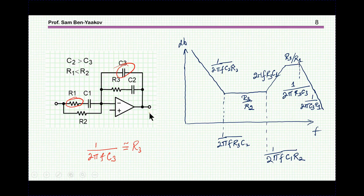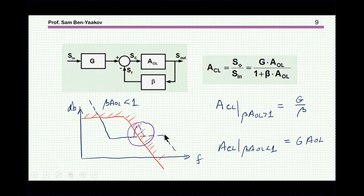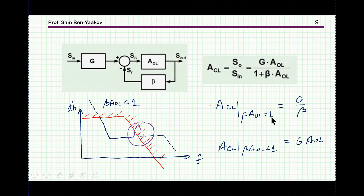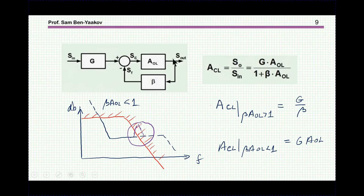Let's go back to the general feedback configuration. We have a G function — the transfer function between the actual input and the summing junction — then the open-loop gain A of the amplifier, and beta, the feedback path. When beta*A is much larger than one, the closed-loop gain is G over beta, which is the ideal amplifier transfer function. If beta*A is smaller than one, the gain is G times A open-loop.